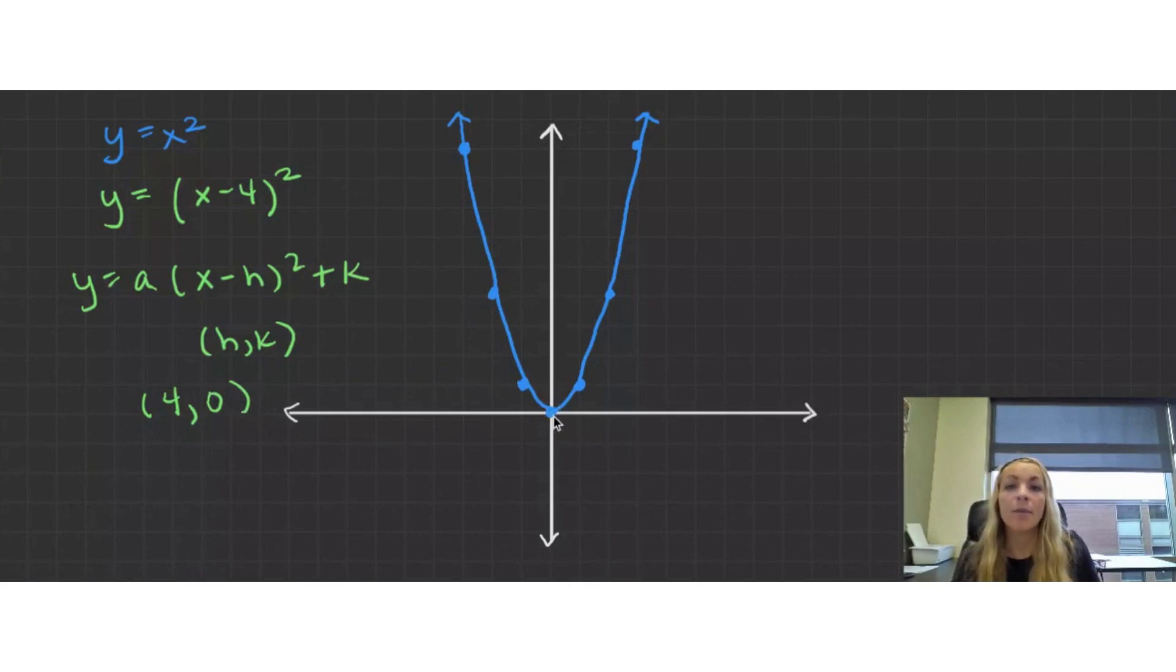And since there's no k value present, it's just going to be 0. So my vertex moves from (0, 0) to (4, 0). And now these points just stay the same. I'm treating this as (0, 0). So 1 squared is 1. 2 squared is 4.